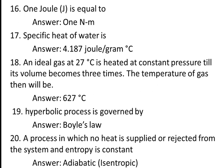Nineteenth question: a hyperbolic process is governed by Boyle's law. A hyperbolic process is one in which pressure times volume is constant. When temperature is constant, we call it an isothermal process. So a hyperbolic process is governed by Boyle's law, where absolute temperature is constant and pressure is inversely proportional to volume.